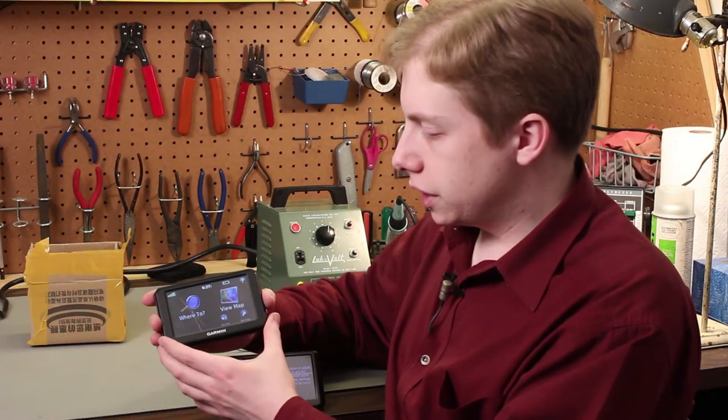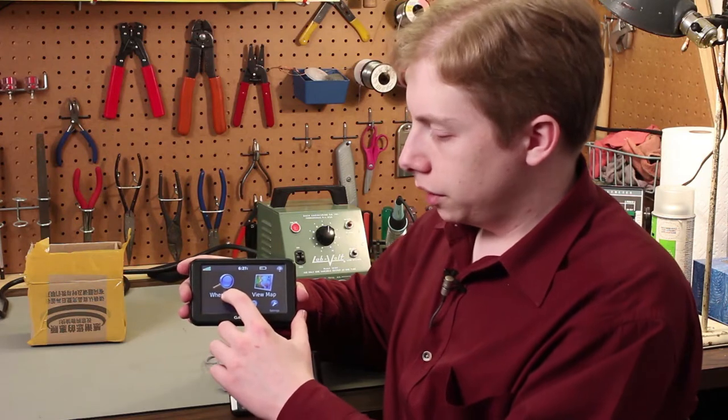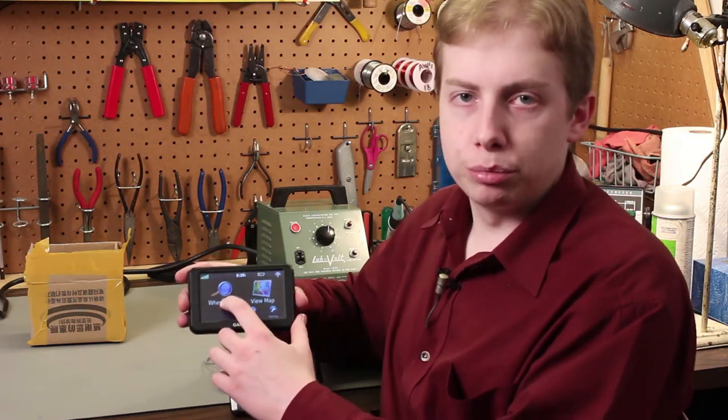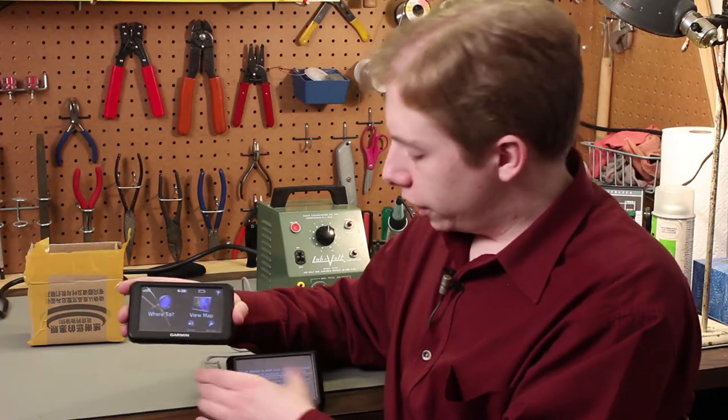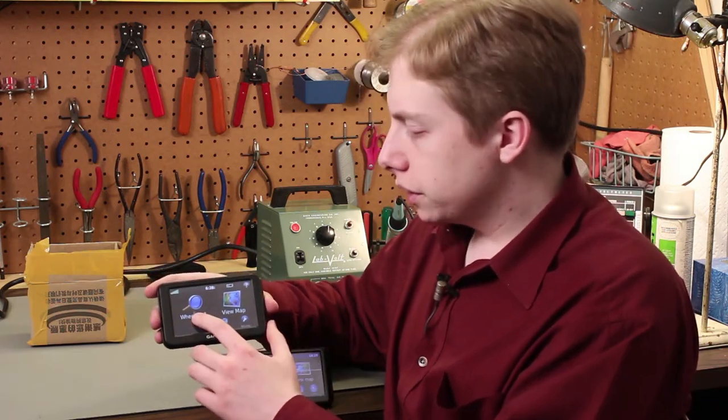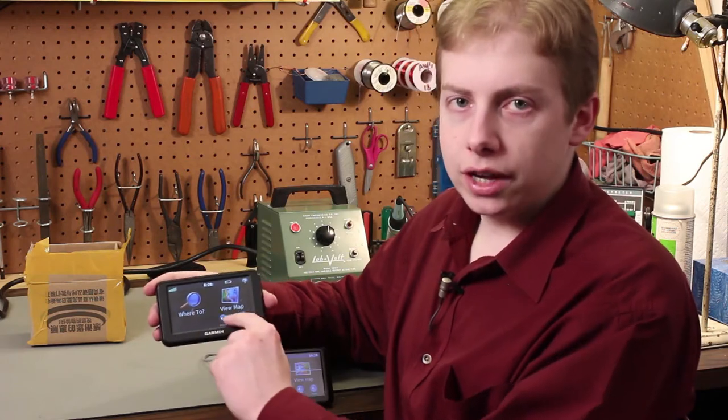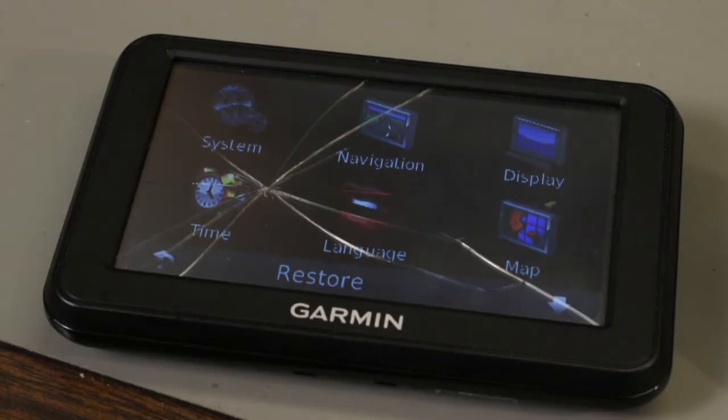However, this GPS receiver has been dropped or something has been pushed against it, and it has a broken digitizer. I'll show some close-ups here in a moment, but this screen has some obvious cracking right across the screen. It's almost in a spiderweb fashion where you can see the point of impact right here, and those lines radiate out from that point of impact.